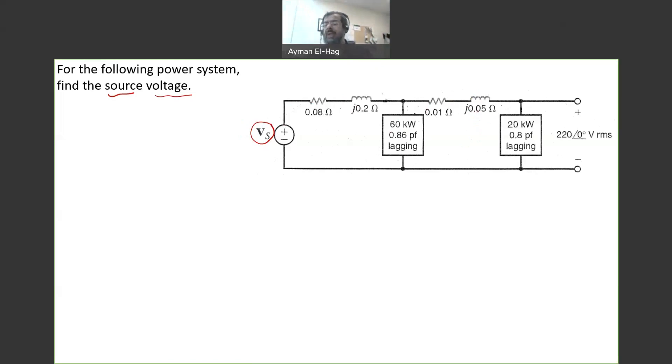And this will change a little bit how we solve this question. So again, the two loads—we have the P and we have the power factor. We know the voltage at the last customer, which I will call load number one. I will call this load number two. Now, to find Vs, we want to find this current I. And this current basically is this current plus this current. I will call this I1, and this is I2. So I is equal to I1 plus I2, very similar to what we started in the previous question.